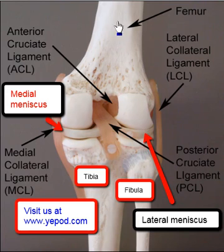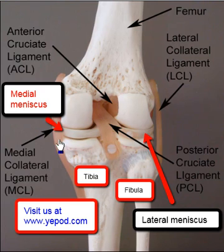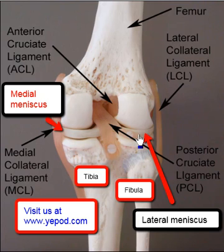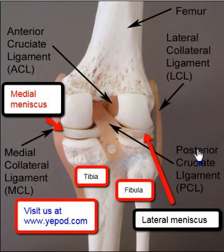To review: this is the femur, and below this is the tibia, and of course we have the fibula. Starting from the medial aspect, we have the medial collateral ligament and the medial meniscus. Here we have the lateral collateral ligament and the lateral meniscus. The arrangement of the anterior cruciate ligament and the posterior cruciate ligament forms an X.